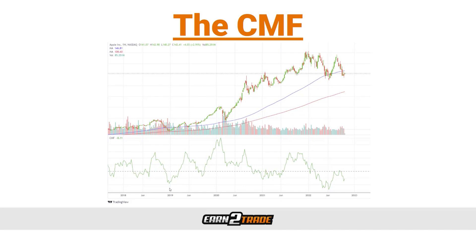The reads that are above zero are indicative of buying pressure, and the reads that are below the zero line, or in the negatives, are indicative of mounting selling pressure. Another way to word that is: when we're above the zero line, we're looking at accumulation in progress, and when we're below the zero line, we're looking at distribution in progress.